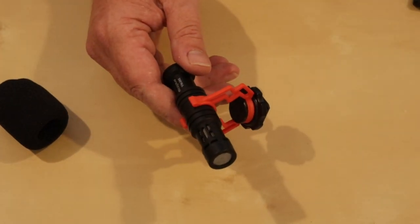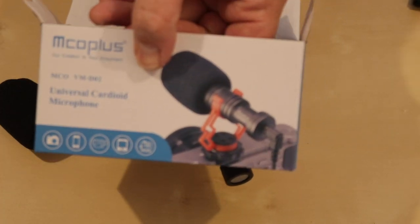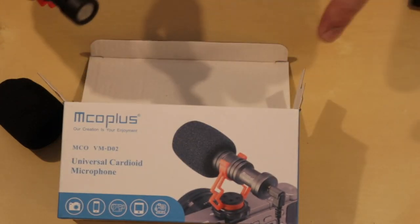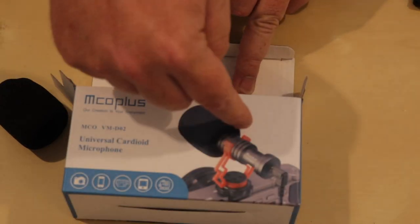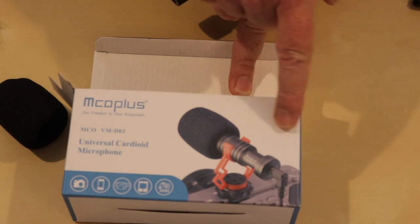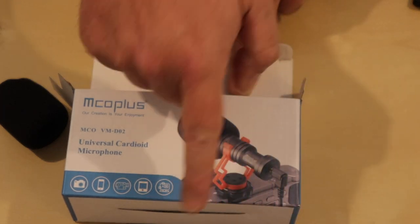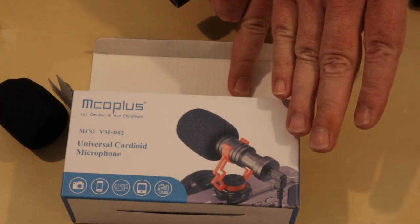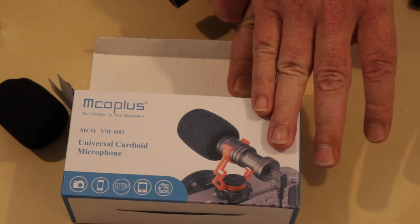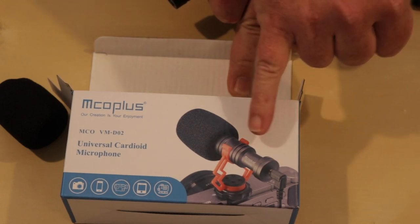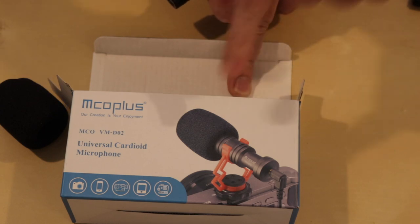As the description on the box does state, this is a cardioid microphone. So what that means is anything that's to the side or around to the rear of the microphone is pretty well attenuated. The sound is only focused on what is in front of the microphone itself.